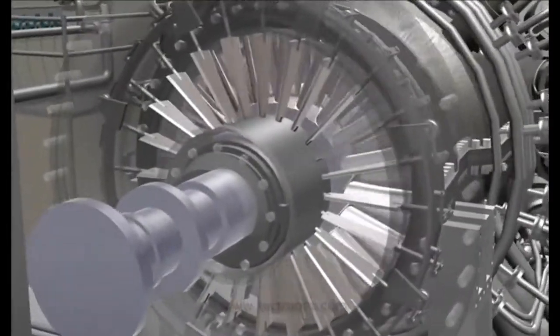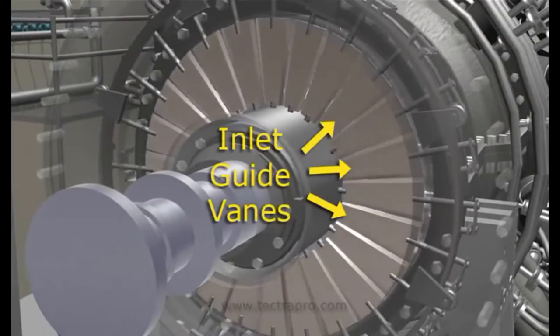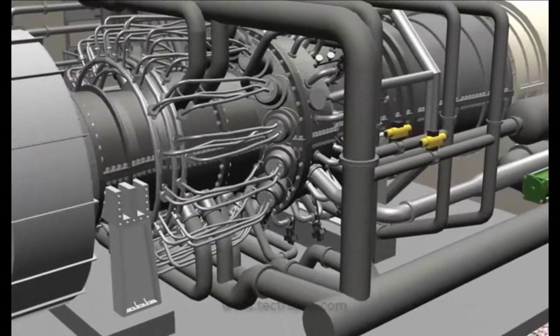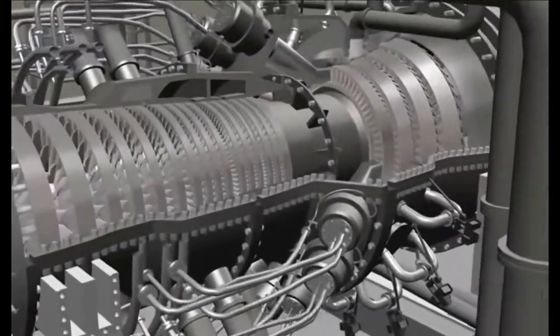The variable inlet guide vanes are used to regulate the amount of air admitted into the compressor intake. The compressor bleed air system serves two purposes.